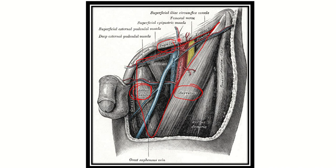To summarize the boundaries of the femoral triangle: medially it is bounded by the medial border of the adductor longus, laterally by the medial border of the sartorius, the base or upper part is formed by the inguinal ligament, and the apex or lower part is formed by the union of the sartorius and adductor longus muscles.